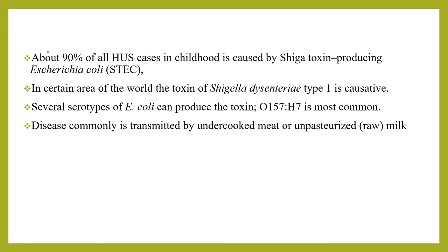About 90% of all HUS cases in childhood are caused by Shiga toxin-producing E. coli, whereas in certain areas of the world, the toxin of Shigella dysenteriae type 1 is the causative agent for diarrhea-associated HUS. Several serotypes of E. coli can produce the toxin, whereas O157:H7 is the most common one. This is commonly transmitted by undercooked meat or unpasteurized milk, because the reservoir of Shiga toxin-producing E. coli is the intestinal tract of domestic animals.